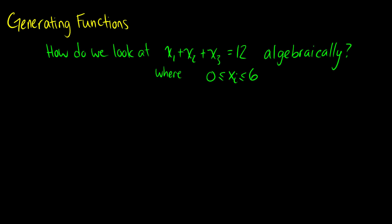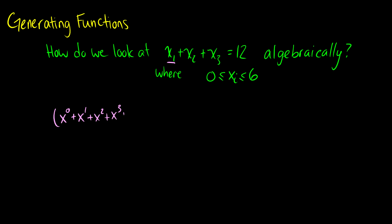So how do we look at this question? We introduce this notation, and every generating function is going to be a formal power series. When we take a look at x1 plus x2 plus x3 is equal to 12, this means we need to choose 12 total objects, so we're looking for the coefficient of x to the 12. The power is always going to be the number of ways you can choose that object. For x1, we can choose it zero times because x can be as low as zero, or one time, two times, three times, four times, five times, or six times.